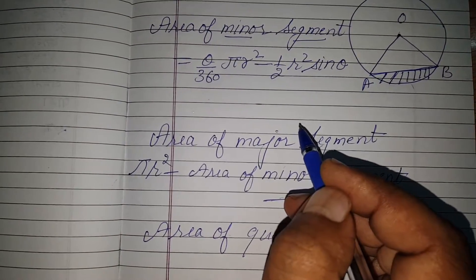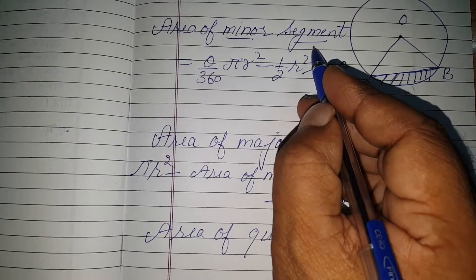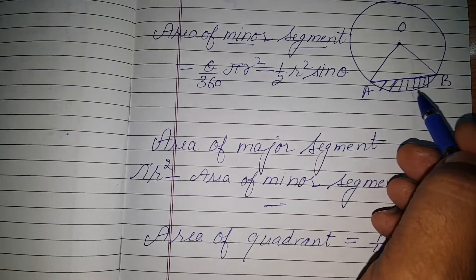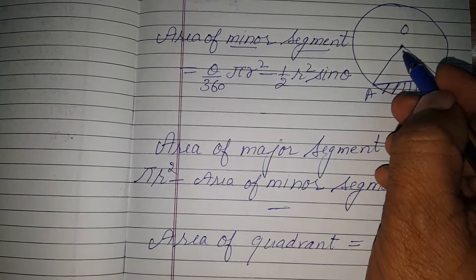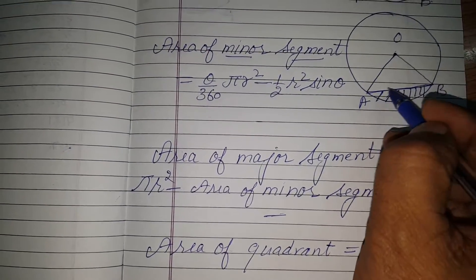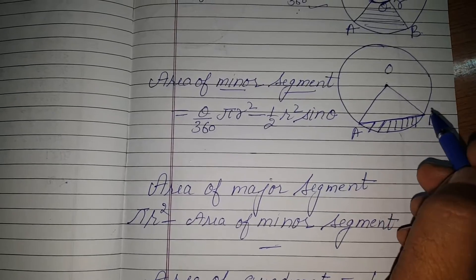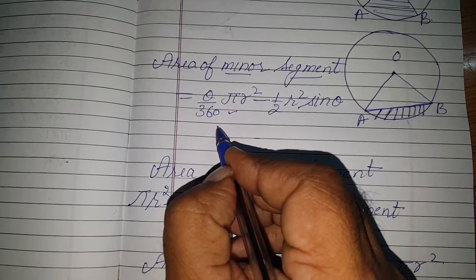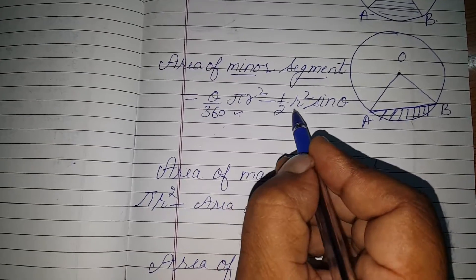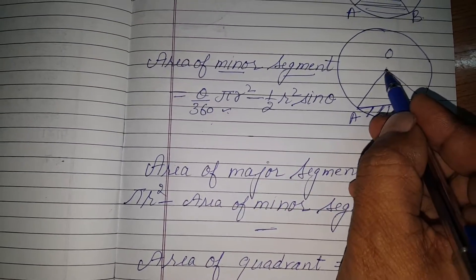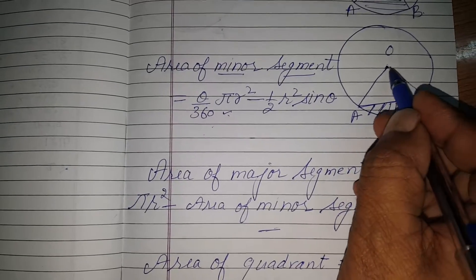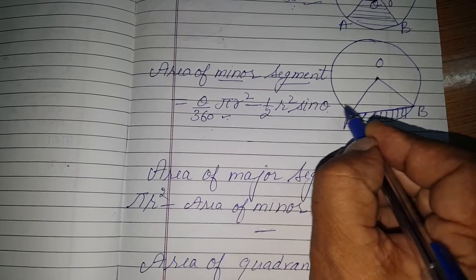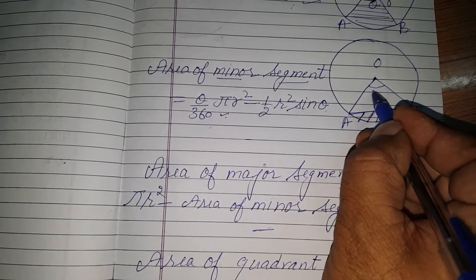To find the area of the minor segment, you take the area of the sector using the formula you have learned, and then subtract the area of the triangle. If you do not have the triangle area formula, recall that sin 60 equals root 3 by 2.